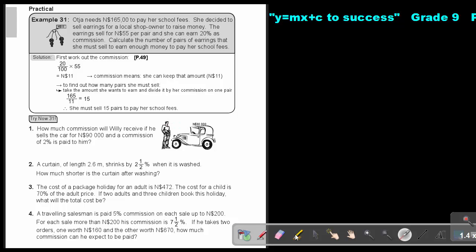I want you to do for me number two. Stop the video and do number two. As soon as you are finished, you can continue with the video. Try now 31, we are going to do number two. A curtain of length 2.6 meters shrinks by 2.5% when it was washed. How much shorter is the curtain after washing? All that we are going to do is work out what is 2.5 out of 100 multiplied by 2.6, and our answer is going to be 0.065 meter, and that will be the final answer.